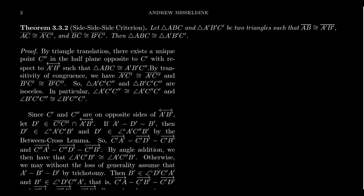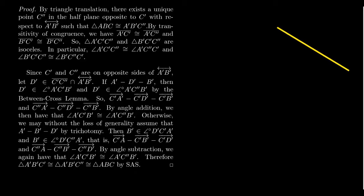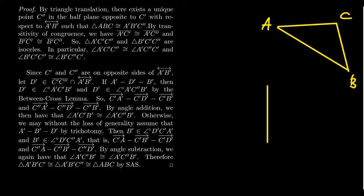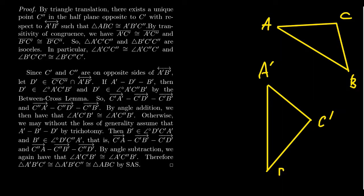This proof is going to be a little bit different than what we saw with angle-side-angle. I'm going to put one of my triangles up here for the sake of reference — this will be our triangle ABC, with vertices A, B, and C. And then we're going to have our other triangle down here — it's a different triangle, of course — with vertices A prime, C prime, and B prime. Those should be our correspondence.